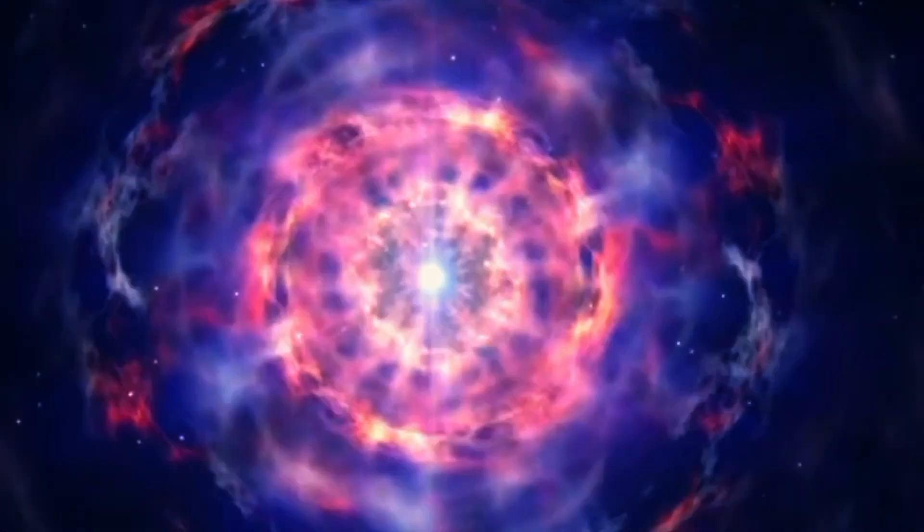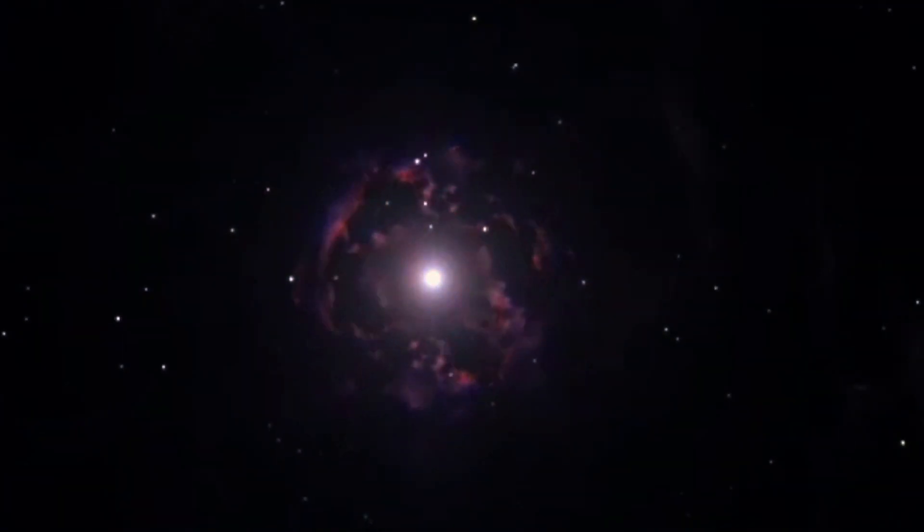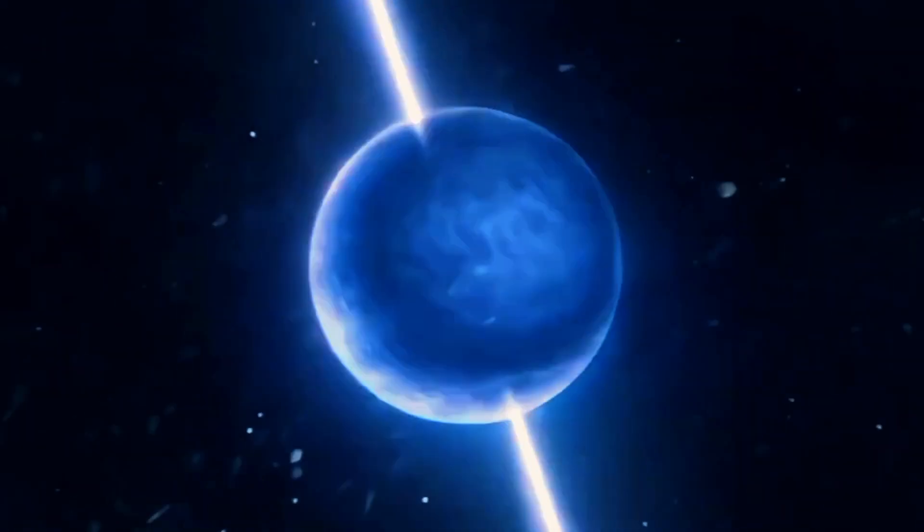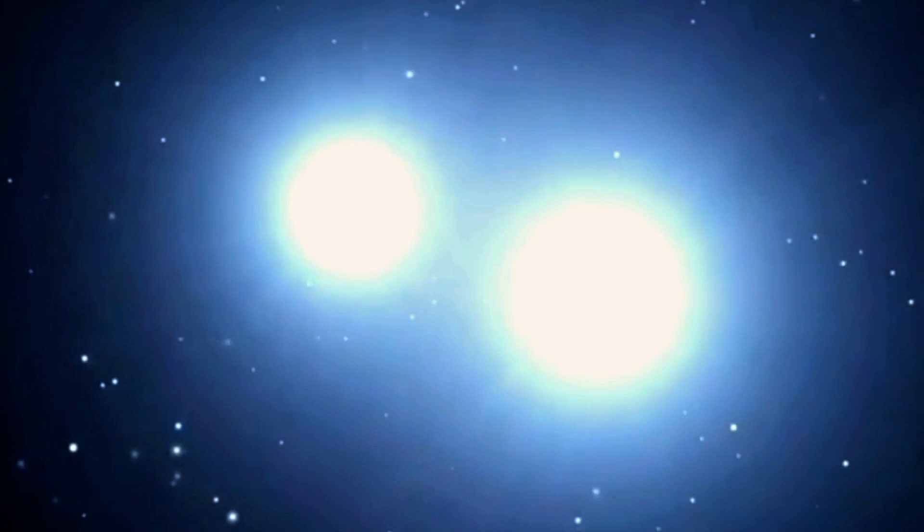The explosive event known as a supernova expels the outer layers of the star into space while the core implodes, packing more mass than our sun into a sphere only about 10 kilometers in diameter. This incredible compression creates an object so dense that a single teaspoon of neutron star material would weigh as much as a mountain on Earth.